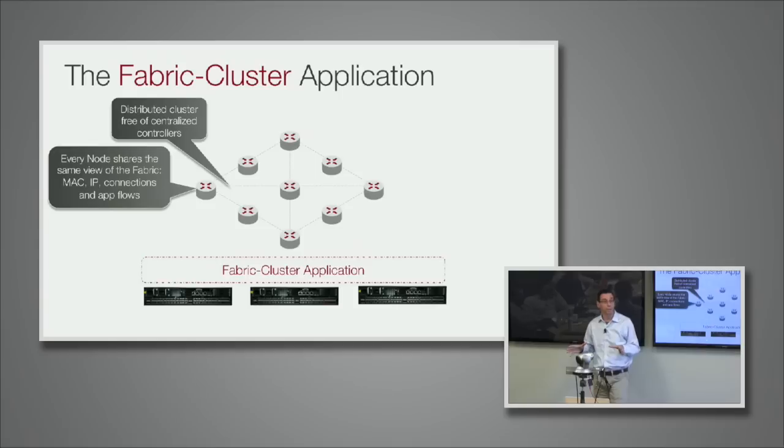Every node knows all the hosts connected to the network, all the MACs, all the IPs, all the connections, all the flows going through the fabric. If they are visible here, they are also visible here.